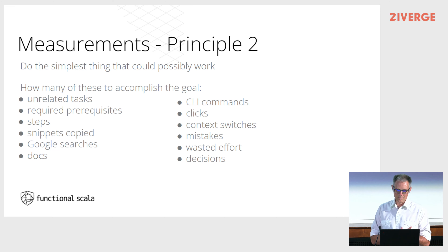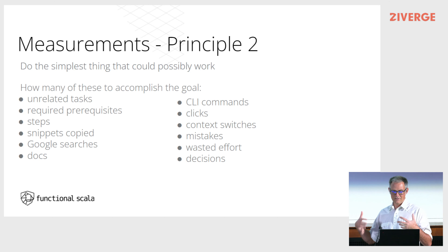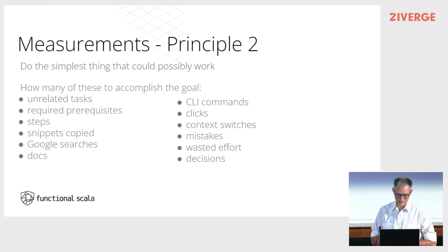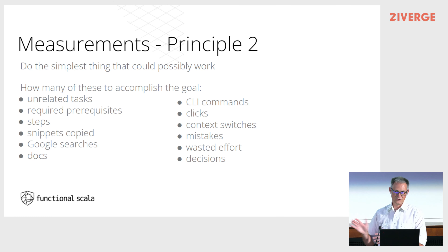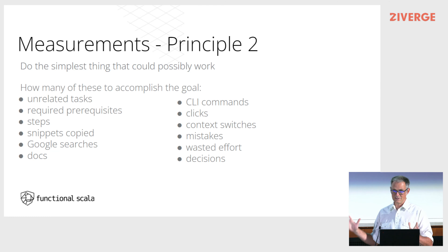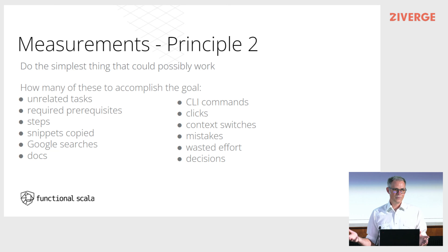How do we measure principle two — do the simplest thing that could possibly work? When someone is trying to accomplish a goal, how many unrelated tasks, required prerequisites, Google searches, CLI commands, clicks, or context switches do they need? All this adds up and gives people too many places to veer off, get lost, make mistakes, and end up with all those Stack Overflow tabs open. A great way to discover these things is to lead a workshop — when someone who has never used your technology shows up with a Windows laptop, you will discover how bad your developer experience is.